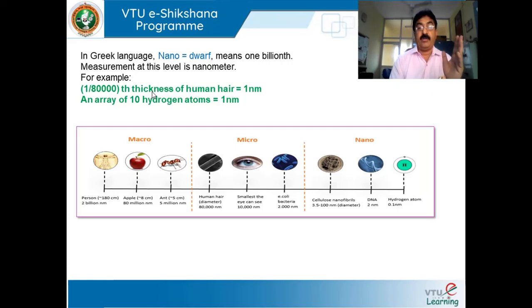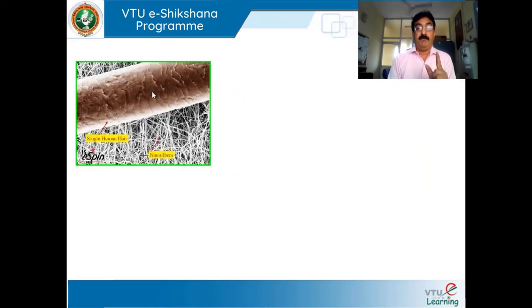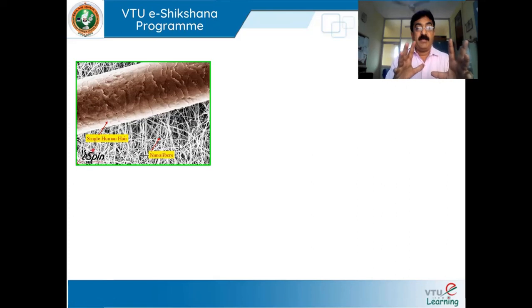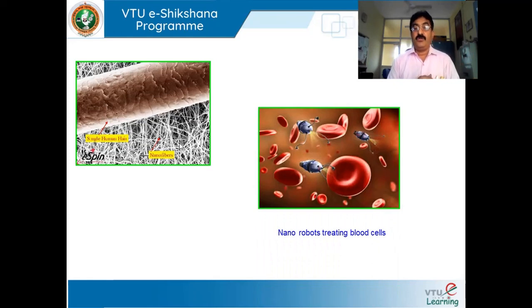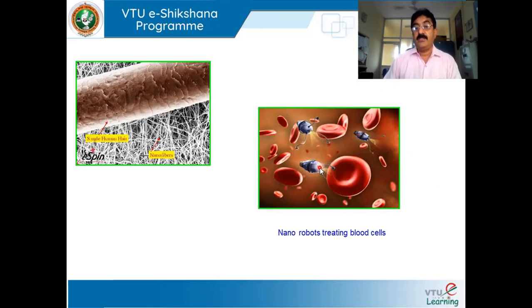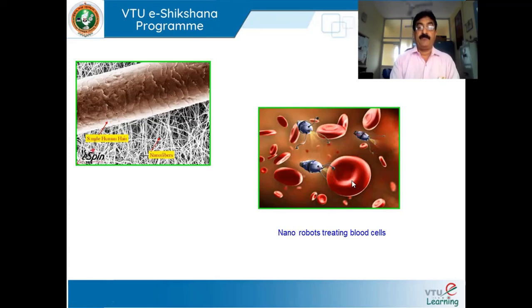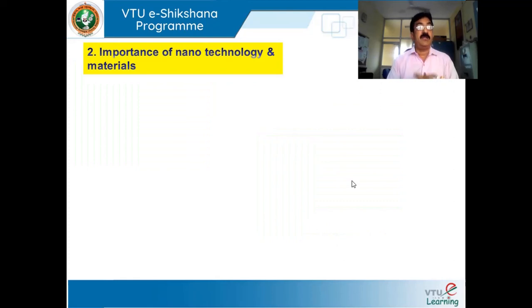This pictorial representation shows a single strand of human hair alongside nanofibers. In front of a nanofiber, hair looks like a big thick rod. This image is about nanorobots and blood cells — one promising proposed application of nanotechnology where nanorobots try to kill cancerous or diseased blood cells in our body.